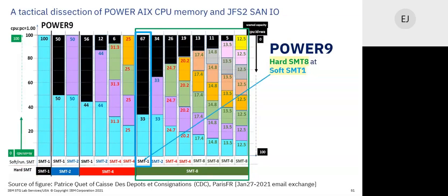Joe: There are questions in the chat: should I set my SMT level to 2, 4, or 8 depending on workload? This could be a good time to talk about in what cases you would actually set the SMT hard to something other than 8 in Power9, versus letting the system decide based on workload — letting the soft SMT vary from 1 to 8. Earl: I have a whole lecture on that.